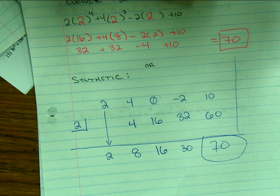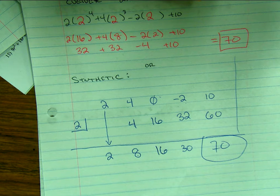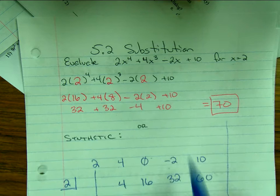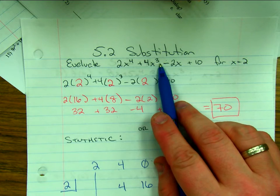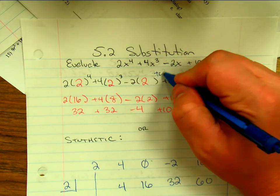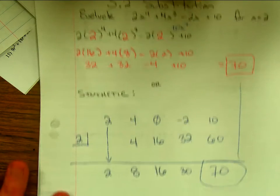70. This is just witchcraft that gets you the same answer. Because there wasn't an x squared term, so essentially it's plus zero x squared right there, because you have to represent every term.